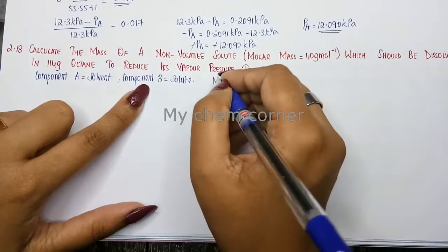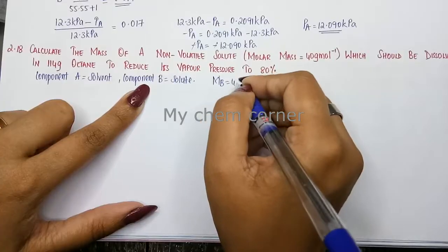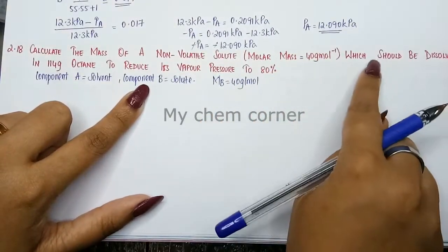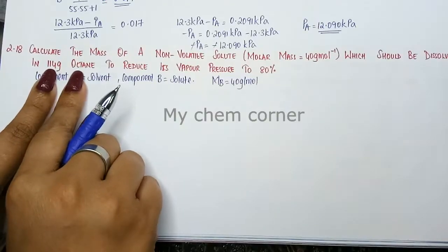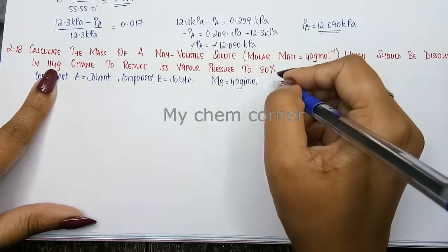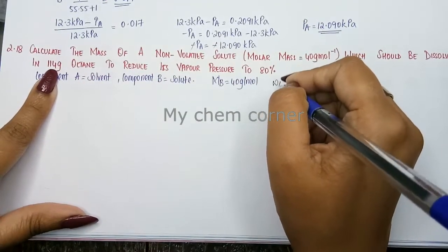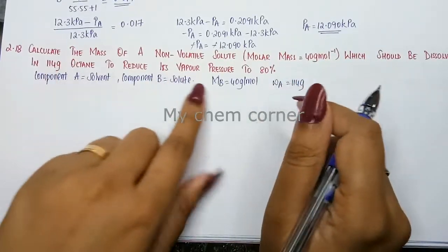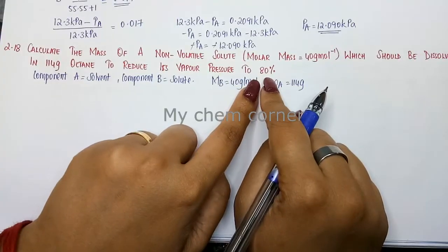Next, it should be dissolved in 114 grams of octane, which is the solvent, so WA = 114 grams, which will reduce its vapor pressure to 80%.